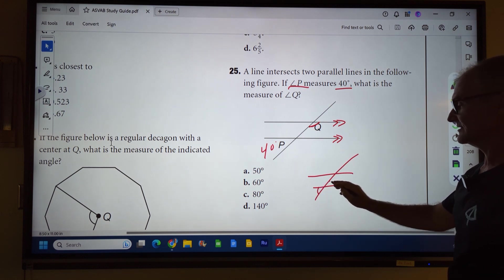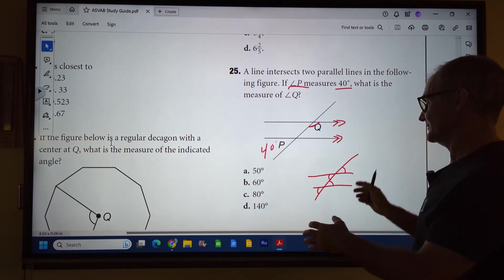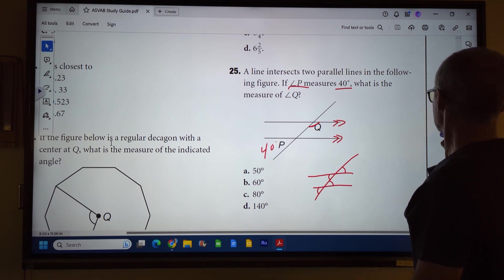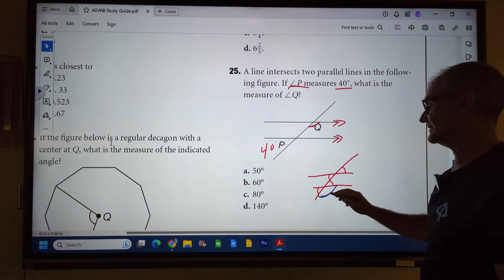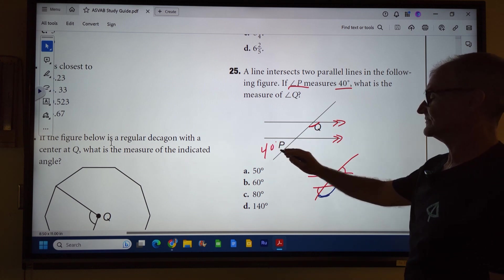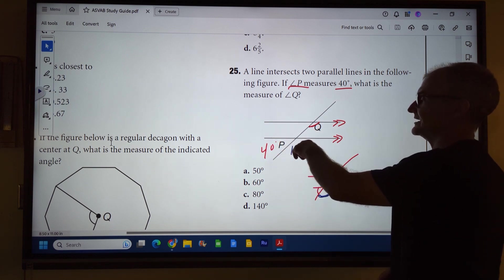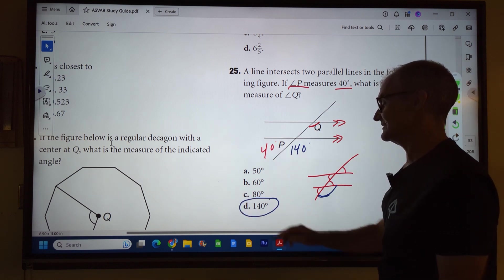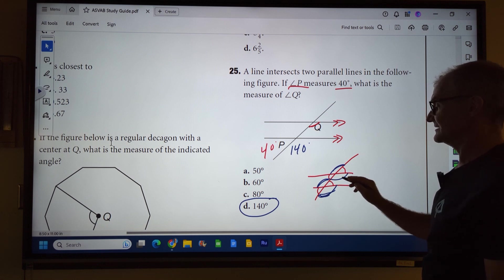If I have parallel lines cut by a transversal, this angle, this angle, this angle, and this angle, all four of those angles are congruent, meaning they're the exact same measure. This angle and this angle right here form a linear pair, meaning they add up to 180. So if I have this one, I can figure out what this is. So if this is 40, this is its linear pair at 140 degrees. Two angles add up to 180. Full circle is 360. So the correct answer is answer D. If this is 140, this is also 140, as is this and this.